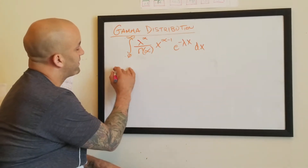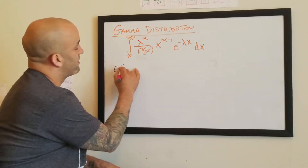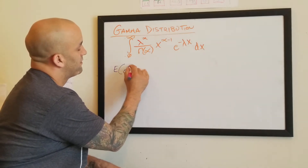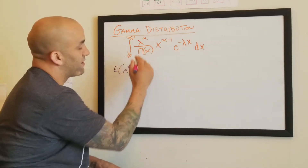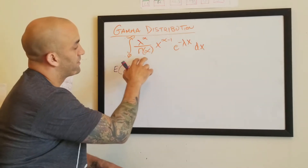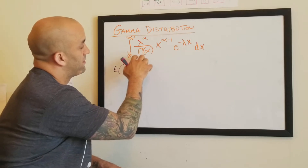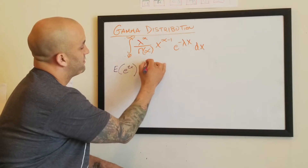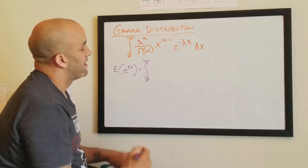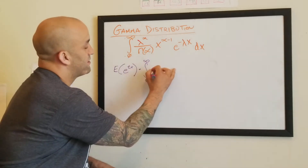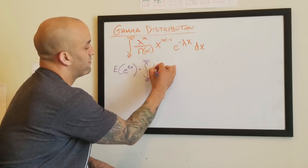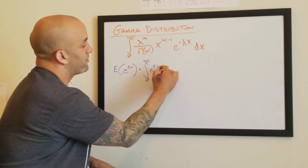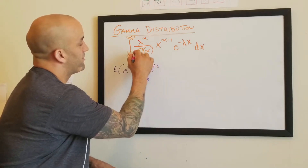So what we want to do is we want to find the expected value of e to the tx. To find that, we take our integrand — we're going to take e to the tx and then multiply it by our f of x.